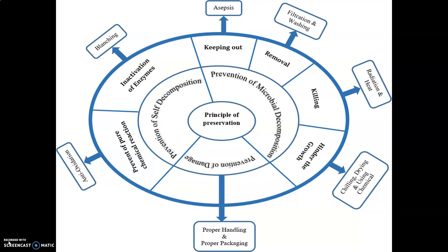Another principle is prevention of pure chemical reactions, mainly oxidation reactions. This can be achieved by using antioxidants. Antioxidants help remove oxygen, thus preventing the chemical reaction. These are all the principles of food preservation.